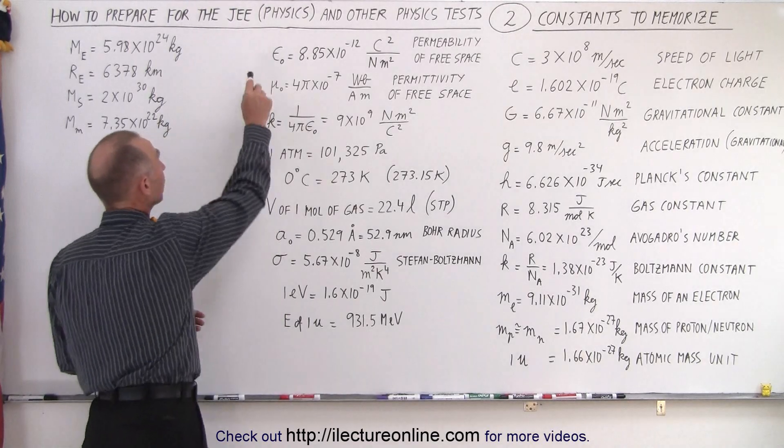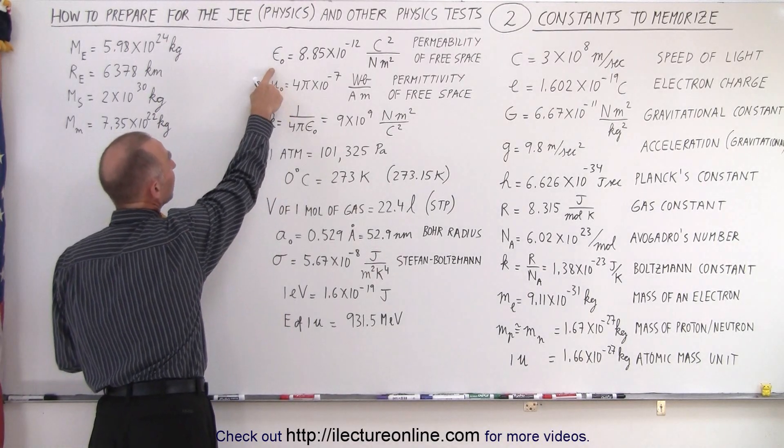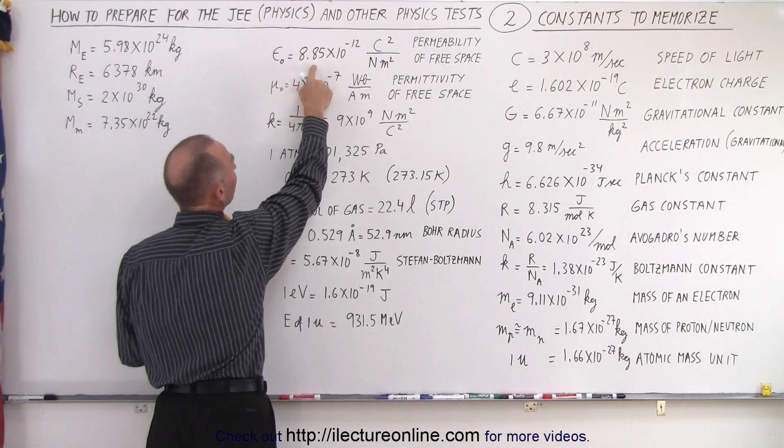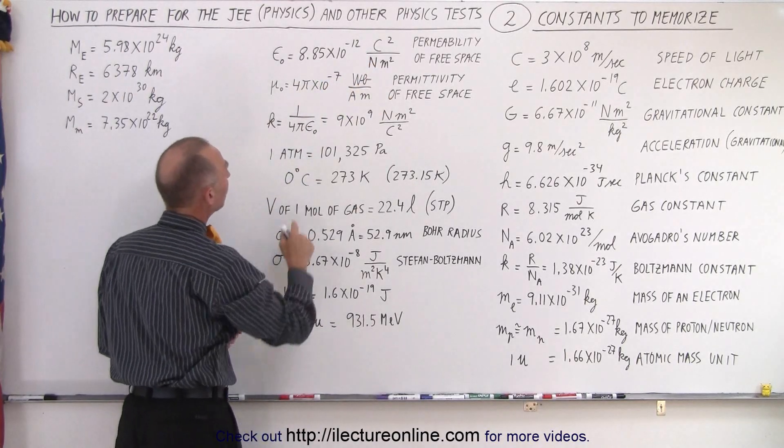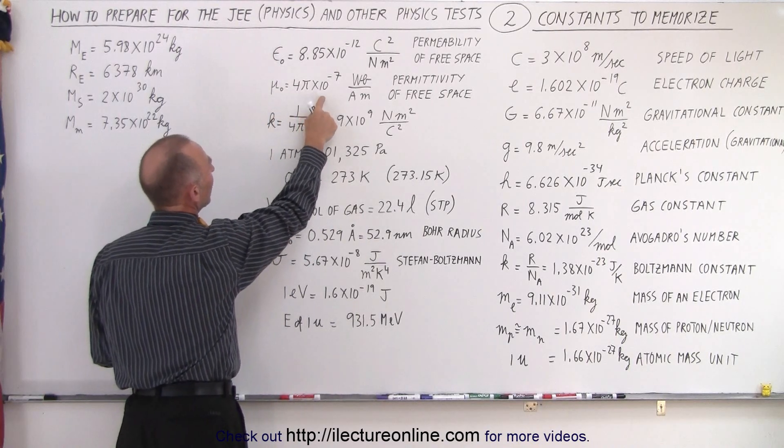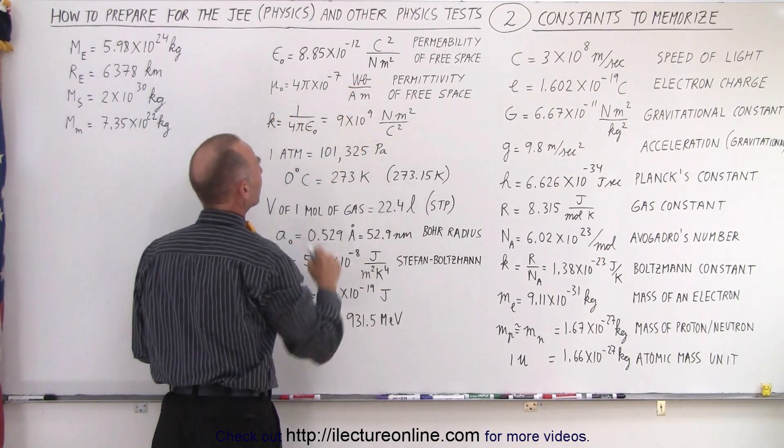Continuing up here, two very important ones, is the permeability of free space at 8.85 times 10 to the minus 12 Coulomb squared per Newton meter squared. And the permittivity of free space, 4 pi times 10 to the minus 7, Weber per amp per meter.